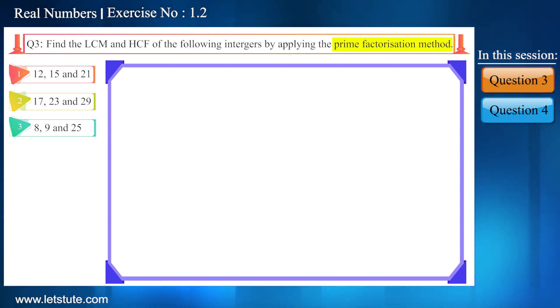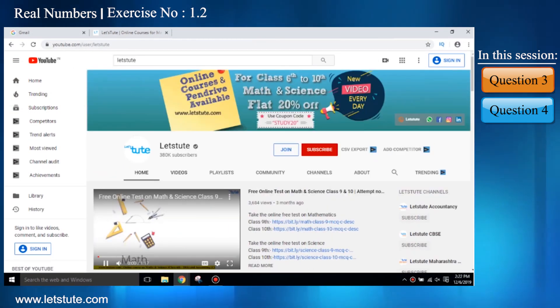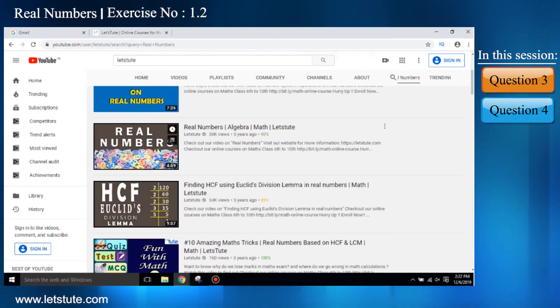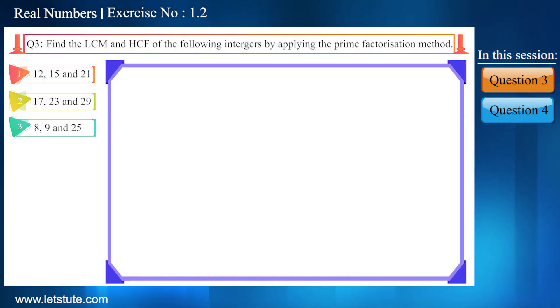We know what the prime factorization method is, but if you want to understand it in more detail, then I would request you to visit our YouTube channel and watch our chapter-wise concept-based videos. So let's take our first numbers: 12, 15, and 21, and now find its factors.